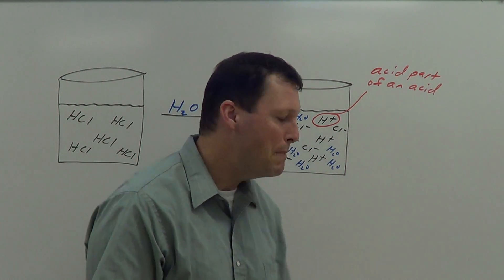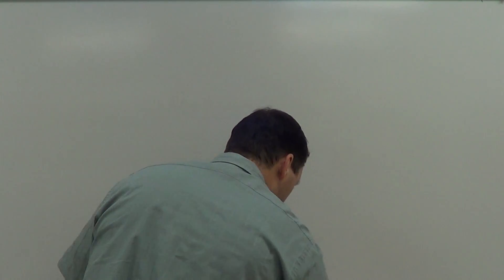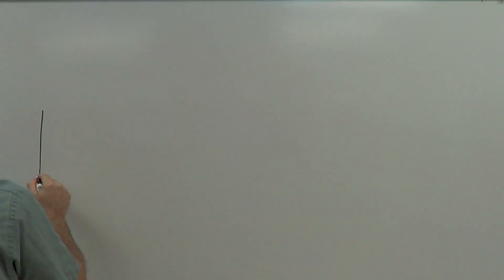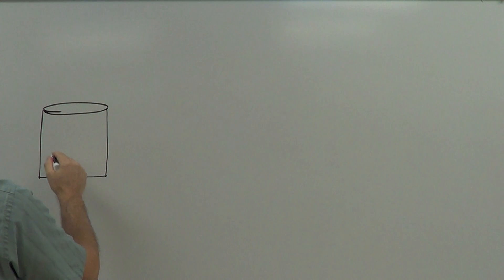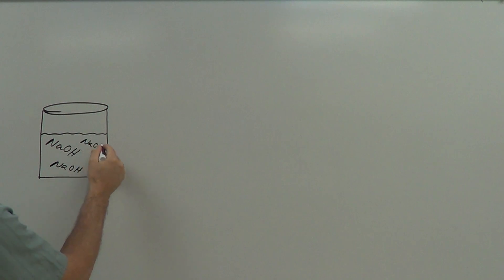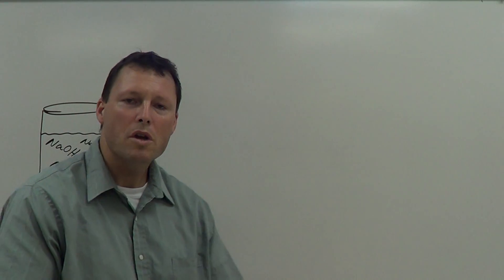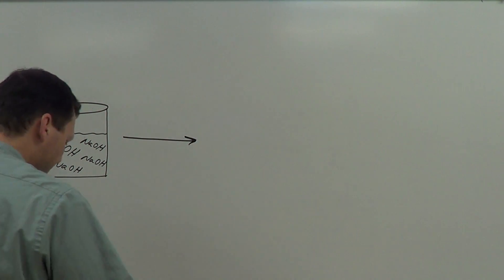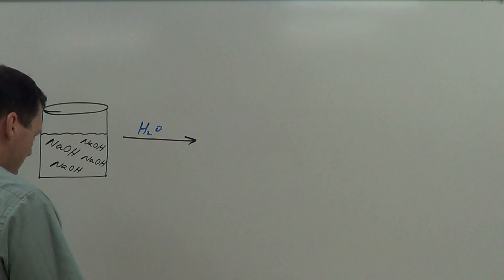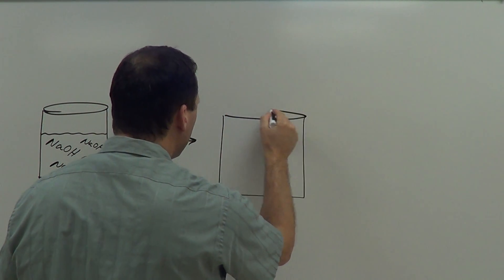Now let's talk about bases. I'm going to draw another beaker. In this beaker we're going to put sodium hydroxide — NaOH. Lots of sodium hydroxide, which often comes in little solid pellets. We're going to add water to this beaker, and when we do, the water is going to break some chemical bonds.